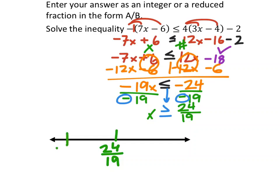To the left would be 23/19, and to the right would be 25/19 like this.